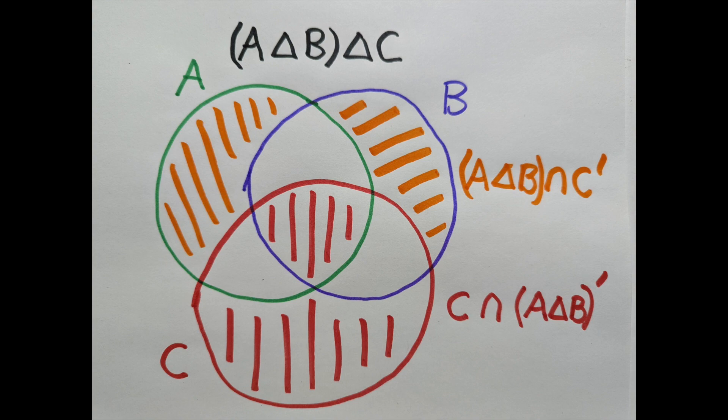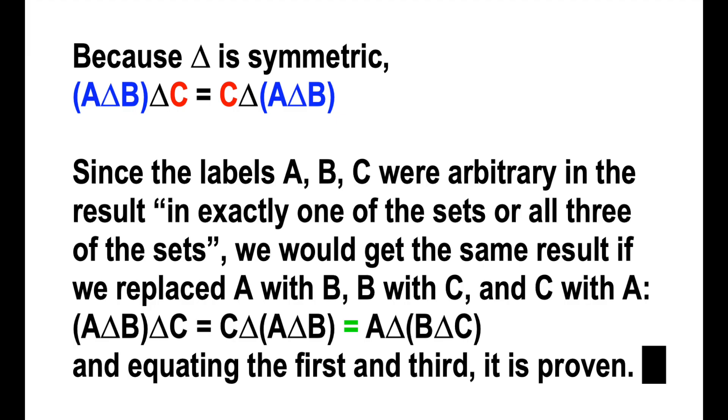So everything in this set is colored orange or red. It's only A, only B, only C, or all three. Because triangle is symmetric, we can swap the blue and red parts in this expression.